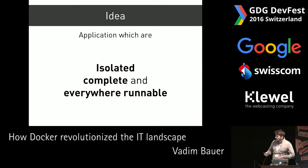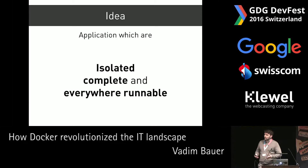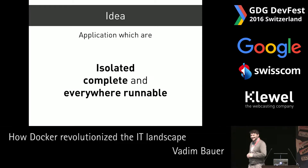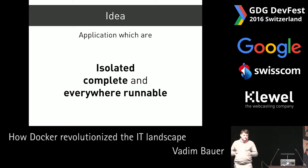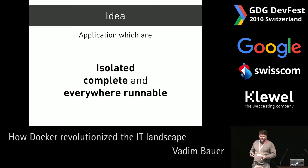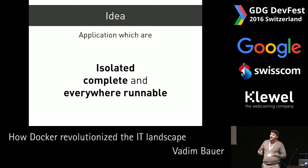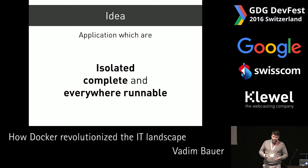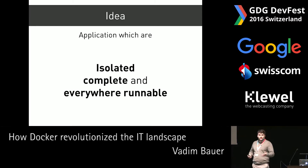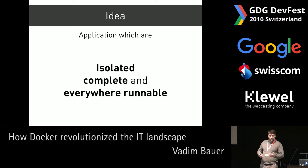Running everywhere means that the container is really running everywhere — meaning on Linux. It runs on every Linux system that has certain kernel parameters that are right. But also, it's now running on Windows since a couple of weeks and months — Windows is already supporting Docker and you can run native Windows applications on the Windows kernel. Probably one day there will also be something with a Mac.